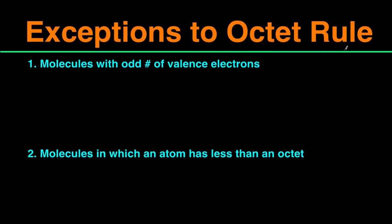The octet rule is the idea that atoms are most stable when they have eight electrons around them. And for the most part, that's true, but there are exceptions, and these exceptions can be broken down into three big categories.